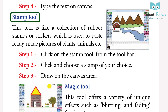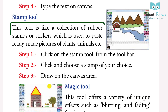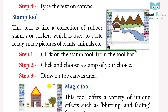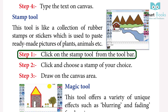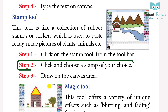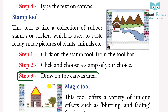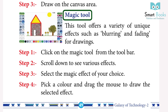Stamp Tool: This tool is like a collection of rubber stamps or stickers, which is used to paste readymade pictures of plants, animals, etc. Step 1: Click on the Stamp Tool from the toolbar. Step 2: Click and choose a stamp of your choice. Step 3: Draw on the canvas area.